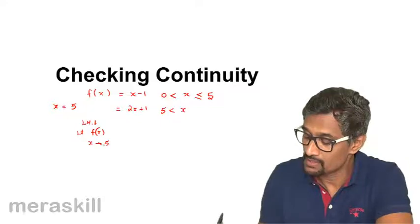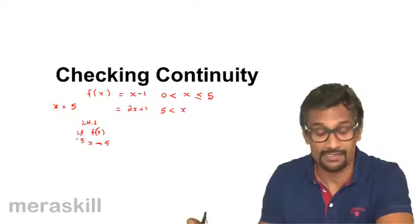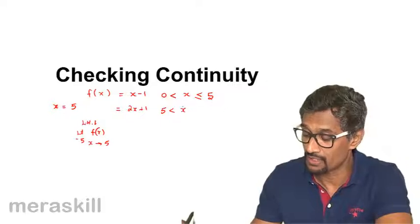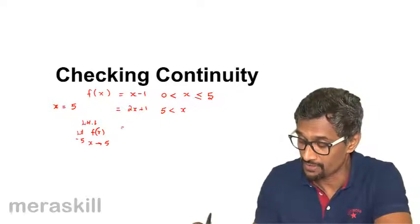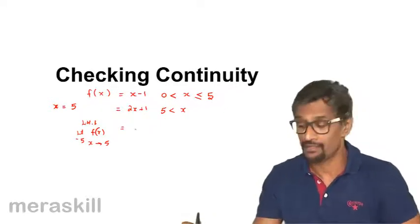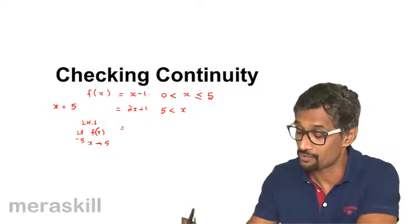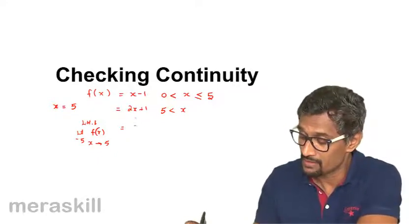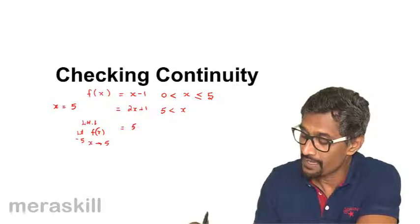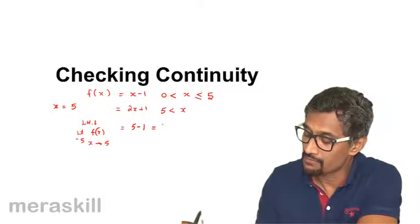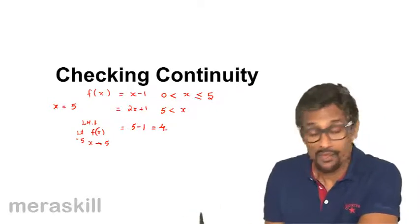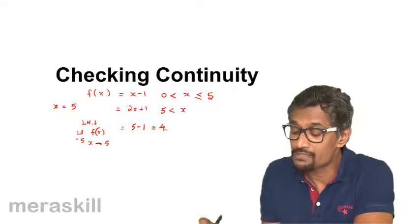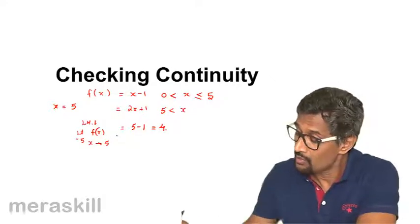The left-hand limit will be the limit of f(x) as x tends towards 5 from 5 minus, that is from the negative side. That means you're considering values less than 5, so you're going to consider this, which is going to be 5 minus 1, which is 4. So the left-hand limit is 4.